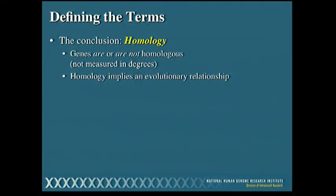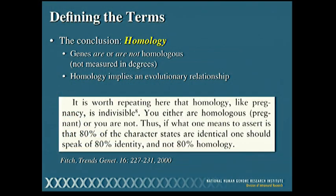The second term — homology — is often misused. Genes either are or are not homologous. This is never measured in degrees, so you cannot say that something is 15 percent homologous or 50 percent homologous with something else. Similarity takes the percentage; homology implies the evolutionary relationship. To put a finer point on this, a quote from Walter Fitch: homology, like pregnancy, is indivisible — you either are homologous, or you are not.